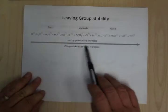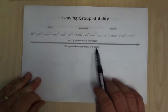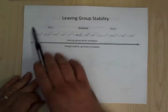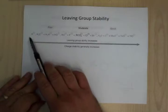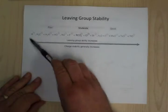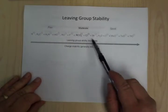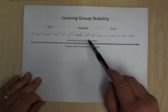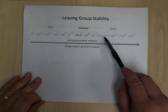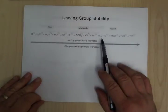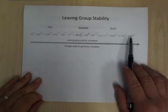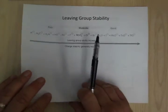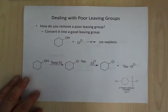Leaving group stability: charge stability increases as you go. Poor leaving groups include carbon, regular alkyl groups, hydride, and fluoride. Chloride is not too bad. Bromide is decent. If you can release water or a gas like N2, those are really good. And mesylate, tosylate, and triflate are all really good leaving groups.